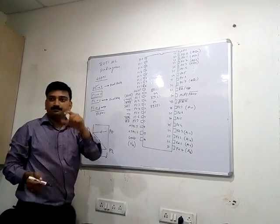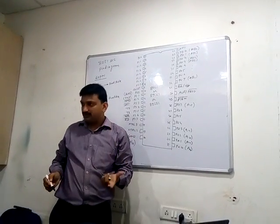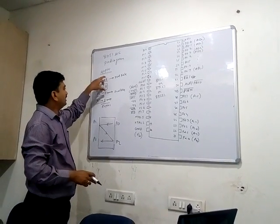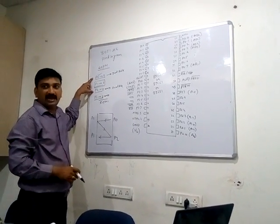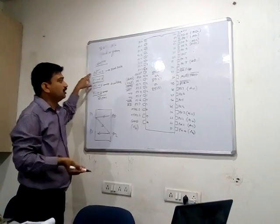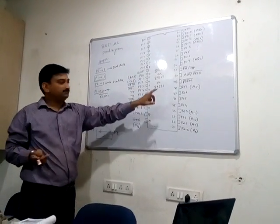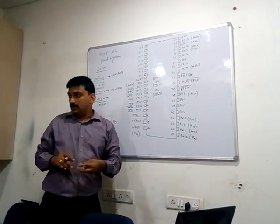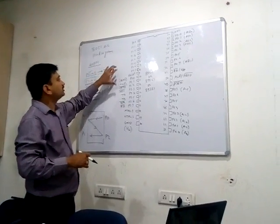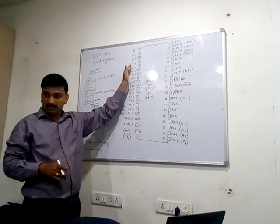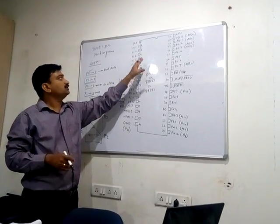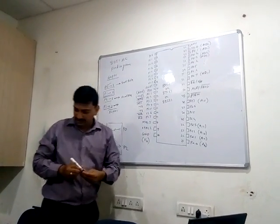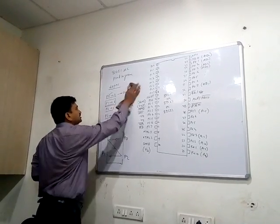Dual role means their pins perform two types of functions. Their primary function is to work as a port for data communication. If there is an additional assignment, these pins can be used in different ways. Initially, we will see only the primary working — how the ports function for simple data communication.